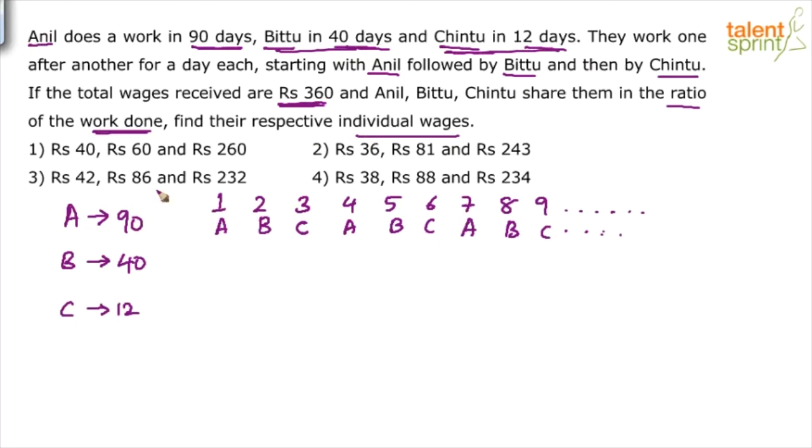What we would do is take the LCM of these three values, 90, 40 and 12. Take an LCM of all these three values. Like Anil can do it in 90 days, Bittu in 40 days and Chintu in 12 days. LCM of 90, 40, 12 will come out to be 360.